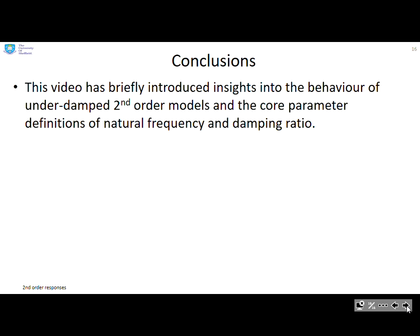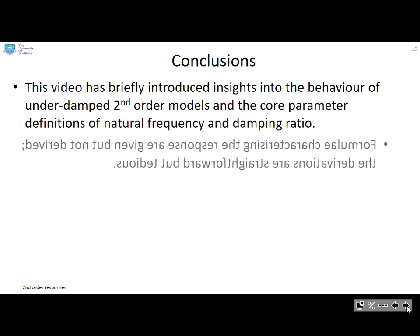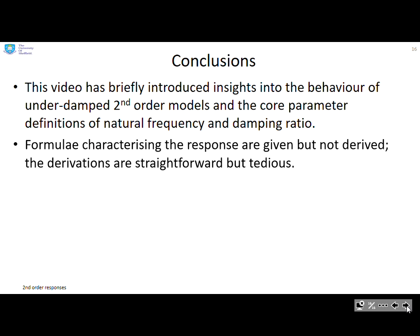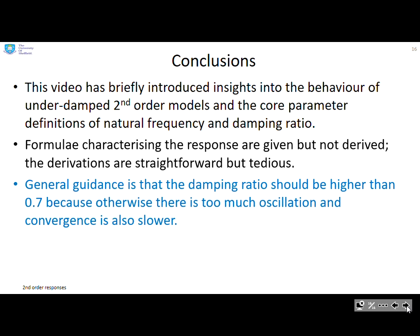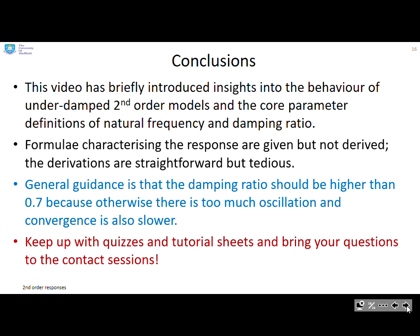Some conclusions then. This video has briefly introduced insights into the behaviour of underdamped second-order models and the core parameter definitions of natural frequency and damping ratio. The formulas characterising the response are given but we haven't derived them. The derivations are straightforward but tedious and they're in the longer notes. The general guidance is the damping ratio should be higher than 0.7 because otherwise there's too much oscillation and convergence may also be too slow. Keep up with the quizzes and tutorial sheets, bring questions to contact sessions, and do look at the slower resources which will go through this material more carefully and meticulously.